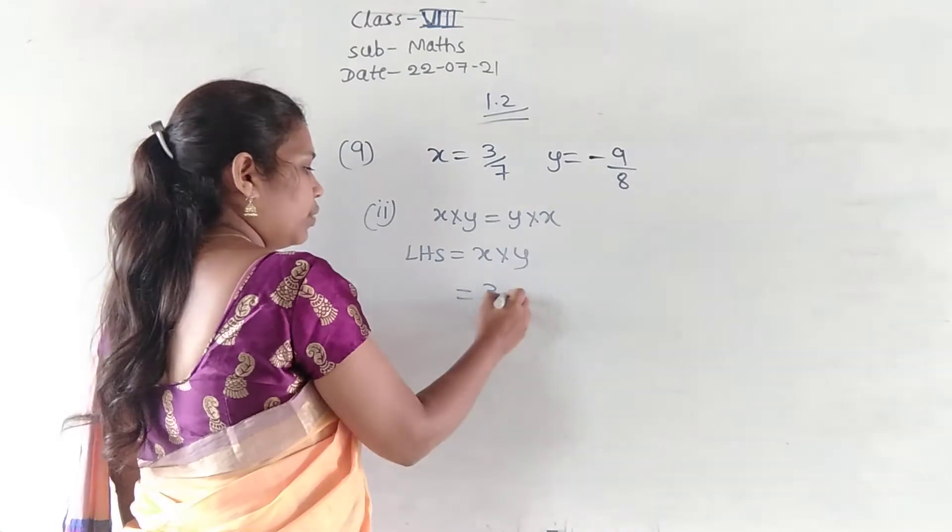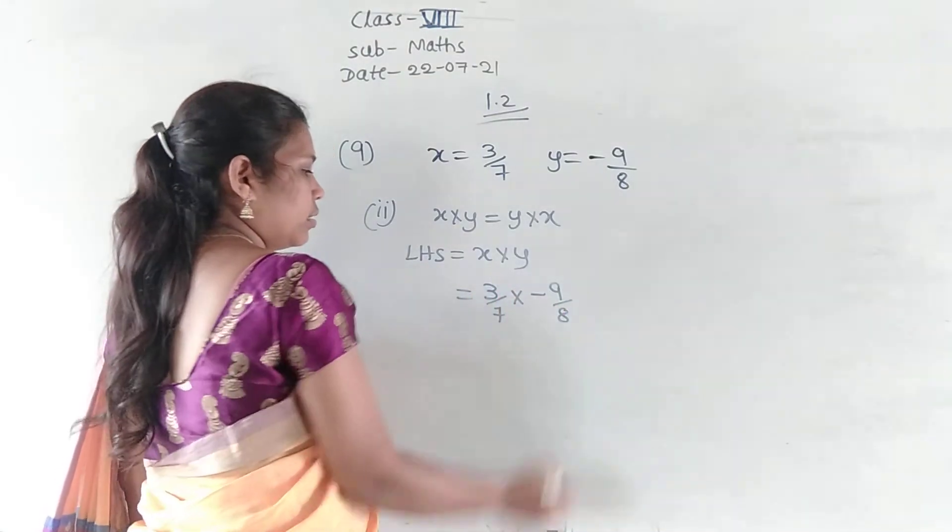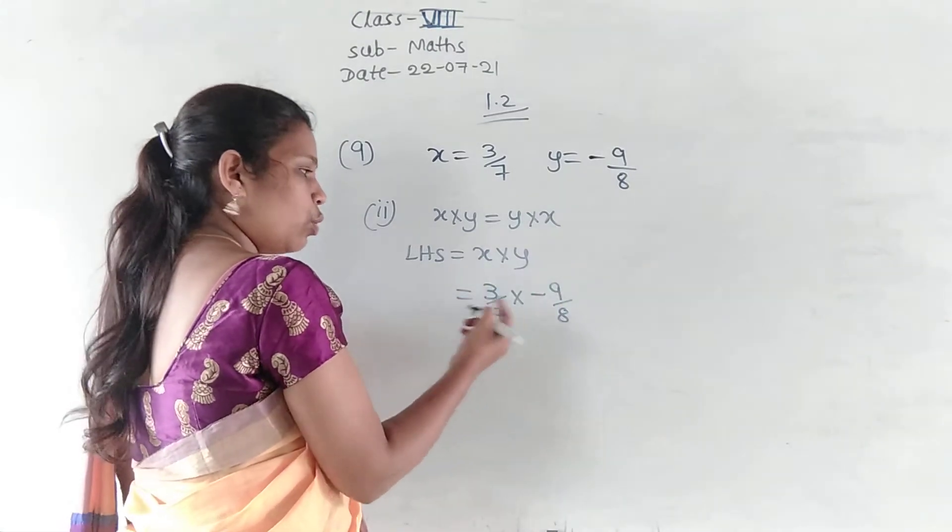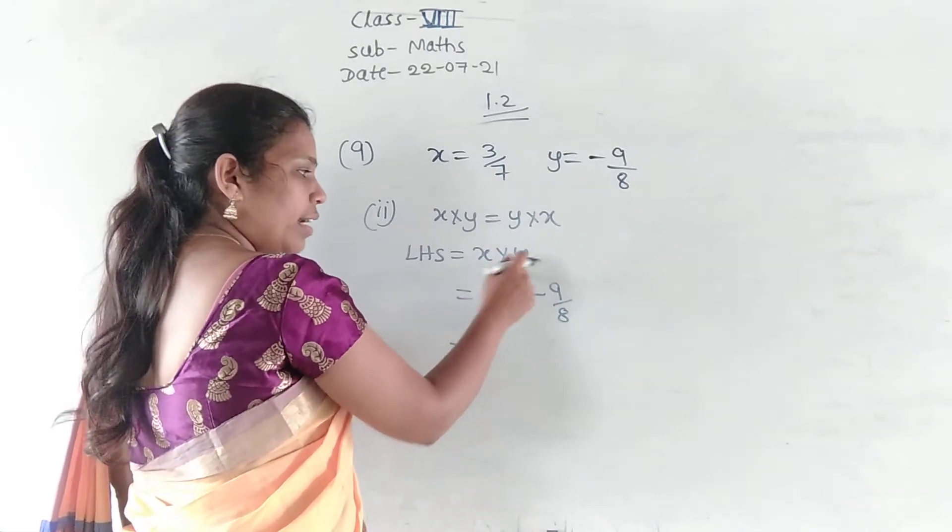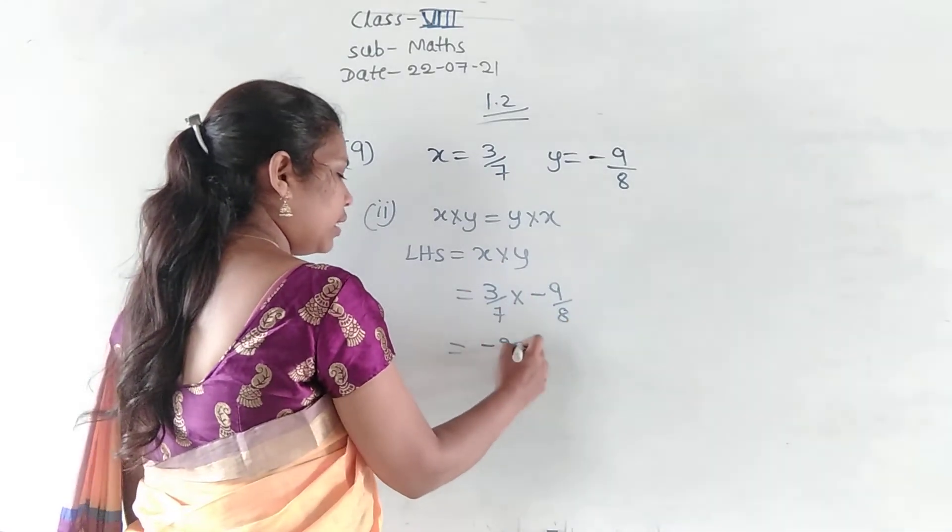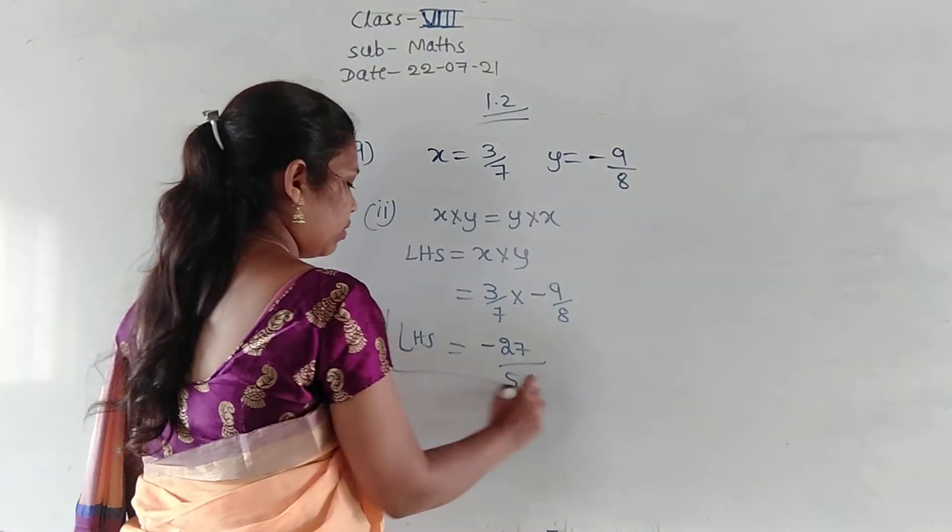First, consider the LHS is equal to X into Y. What is the value of x here? 3 by 7 into minus 9 by 8. Is there any cancellation? Is there cross cancellation? No. So, just multiply numerator with numerator and denominator with denominator. That will be minus 27 divided by 56. This will be the LHS value.